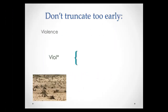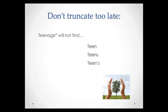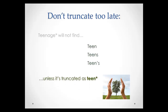When truncating, keep in mind that you should not truncate too early. The word violence, when truncated at 'l,' will bring up unrelated words such as viola and violin. Similarly, truncating too late will leave out useful words. For example, truncating the word teenage at the end of the word will not find teen and teens. The proper truncation for teenage would be teen*.